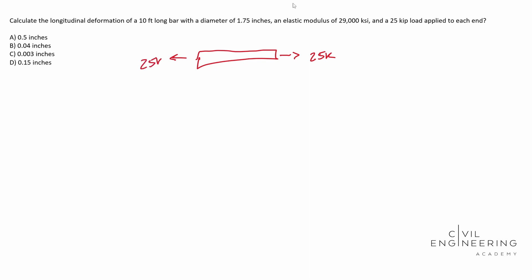We have a 25 kip load being applied to each end there. And basically we're wanting to see how far this thing stretches. We have an elastic modulus available to us. We know the diameter of it. So whenever you look at this, you need to recognize that it's talking about a bar. Immediately when we're talking about a bar, you need to be thinking axial. That needs to be where your brain automatically goes as soon as you see the word bar, because you're going to have loads pulled on each end of it.